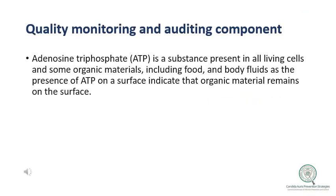Another method for monitoring the quality of cleaning and disinfection is ATP — adenosine triphosphate — testing. ATP is a substance present in all living cells and some organic materials, giving an indicator that an area is contaminated with organisms. The presence of ATP on surfaces, including from food and body fluids, indicates that organic material remains and the surface has not been cleaned appropriately.